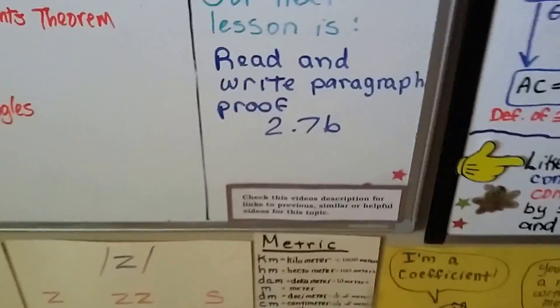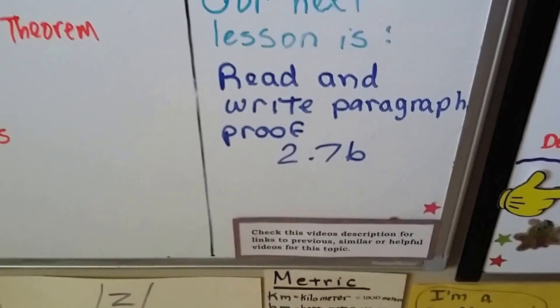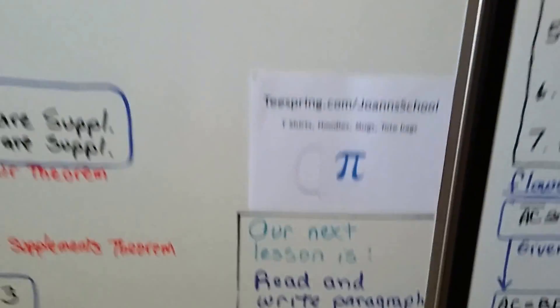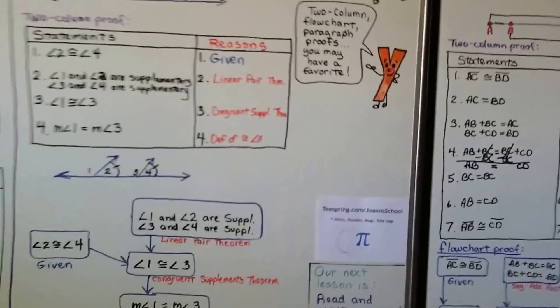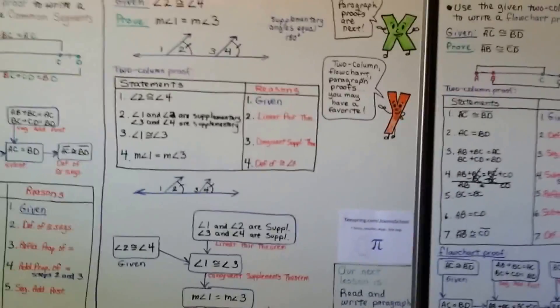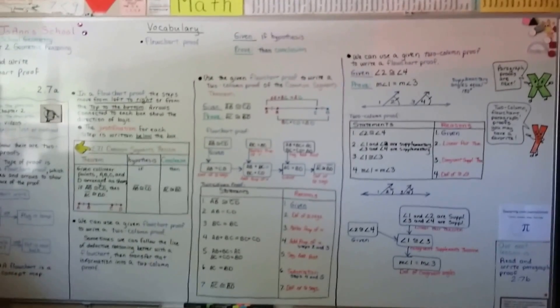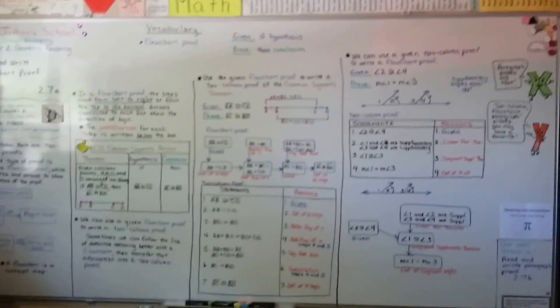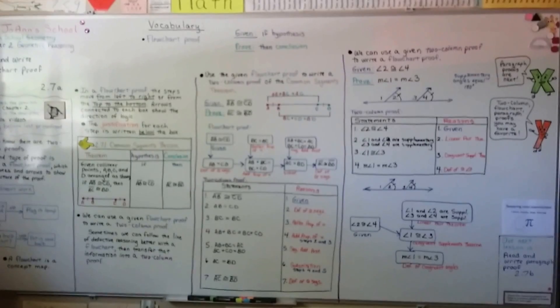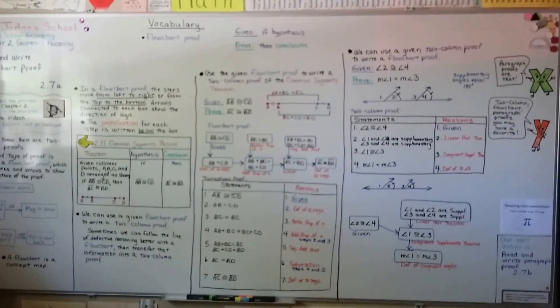Our next lesson is how to read and write paragraph proofs — that's going to be 2.7B. These proofs can be really confusing, but take them one step at a time. If there's one type of proof you're better at than the others, use that easier proof to make the one you need. Don't forget to mark up your diagrams to help you figure things out — use the information from the given. See you next time!